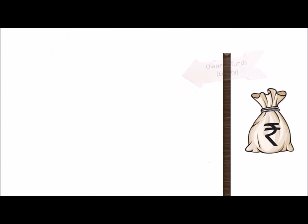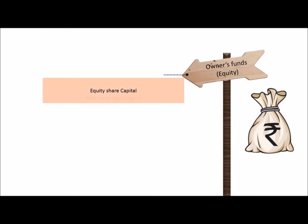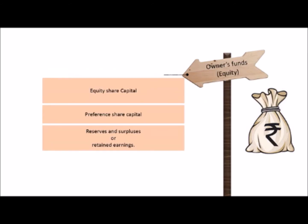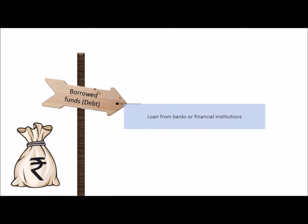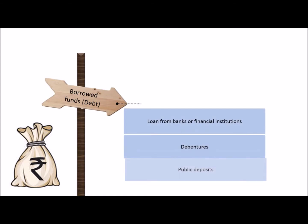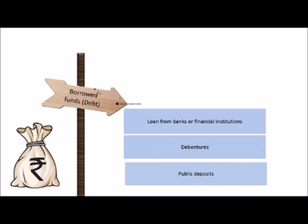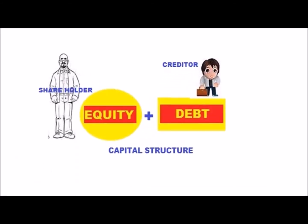Owners funds or equity include equity share capital, preference share capital, and reserves and surpluses. Borrowed funds or debt include loans from banks or financial institutions, debentures, and public deposits.